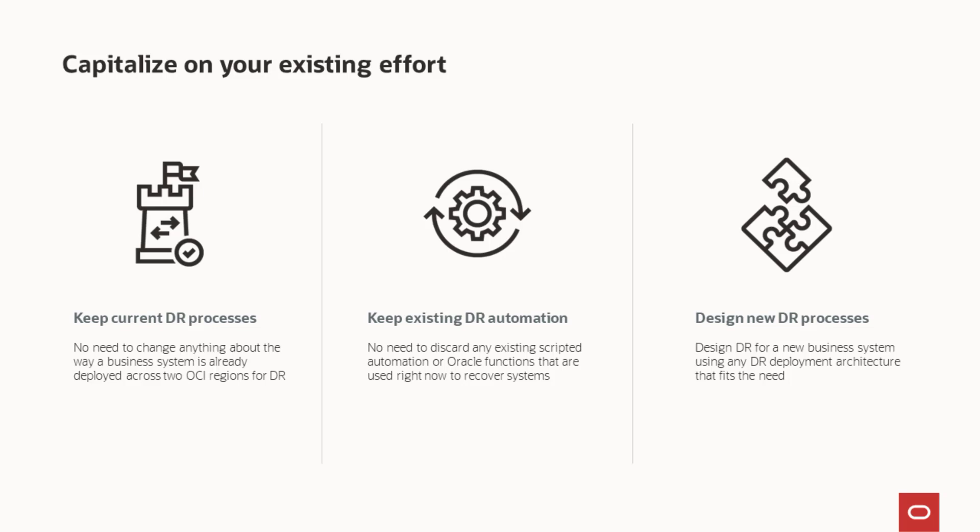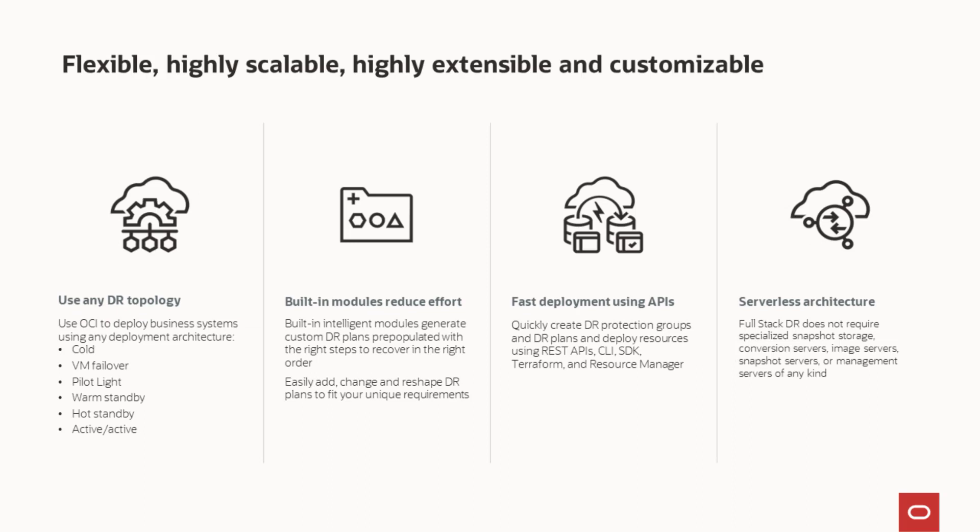You are also free to design new DR processes. We can automate recovery steps for whatever new systems you are planning. You might even want to redesign some of your existing DR processes once you see how easy Fullstack DR makes creating and executing DR runbooks. Unlike our competition, Fullstack DR does not limit or make you conform to a certain way of deploying your business systems for disaster recovery. You simply use standard OCI services to deploy networking, compute, storage, and databases across OCI regions following any deployment architecture your team wants to devise. As long as your business system can be recovered manually, you can automate it with Fullstack DR without consuming a lot of effort.